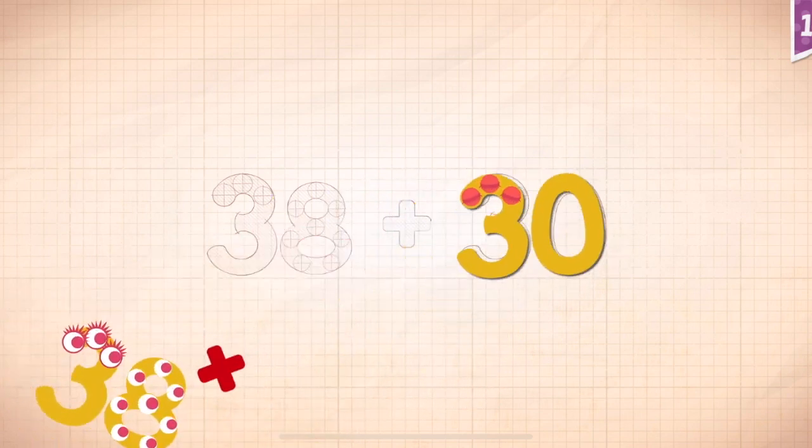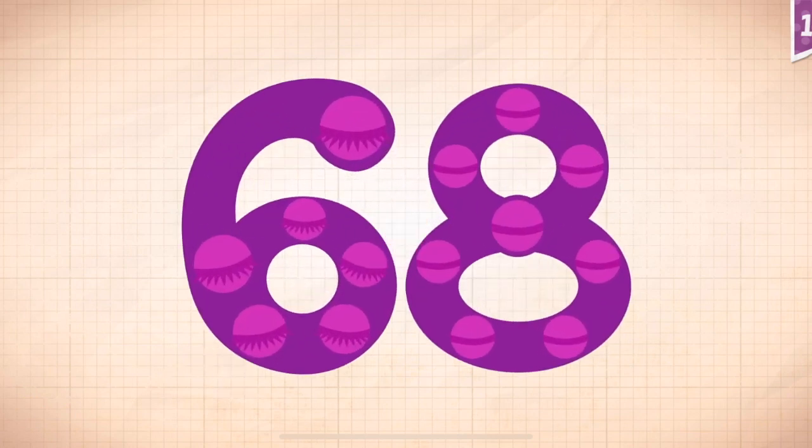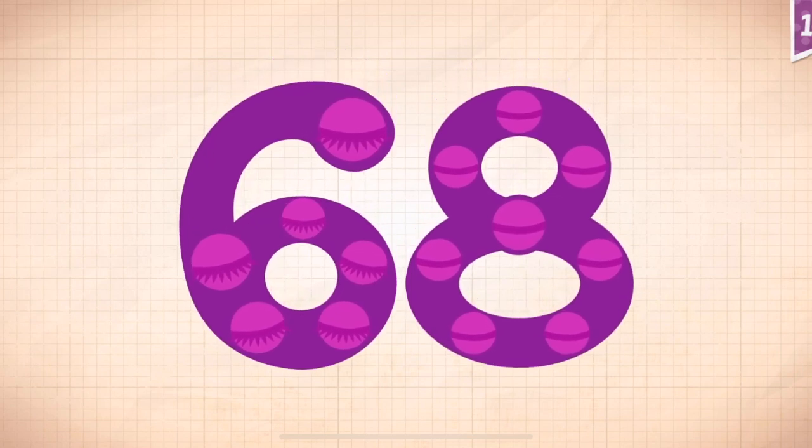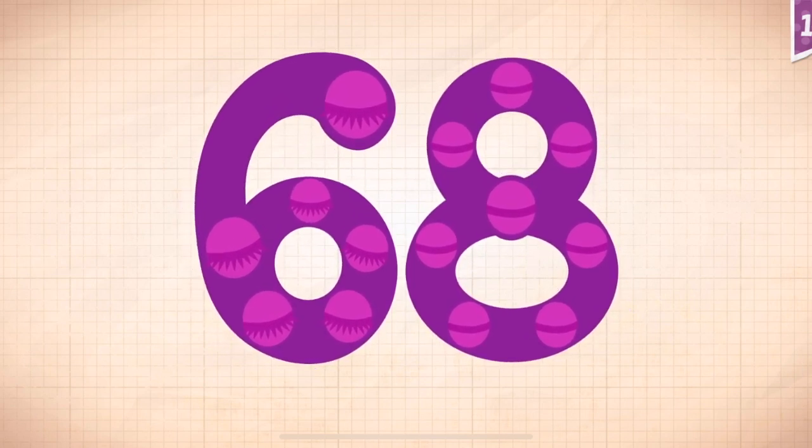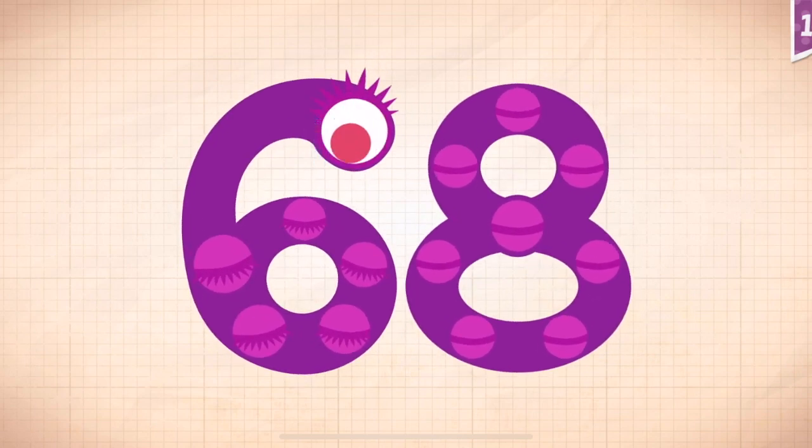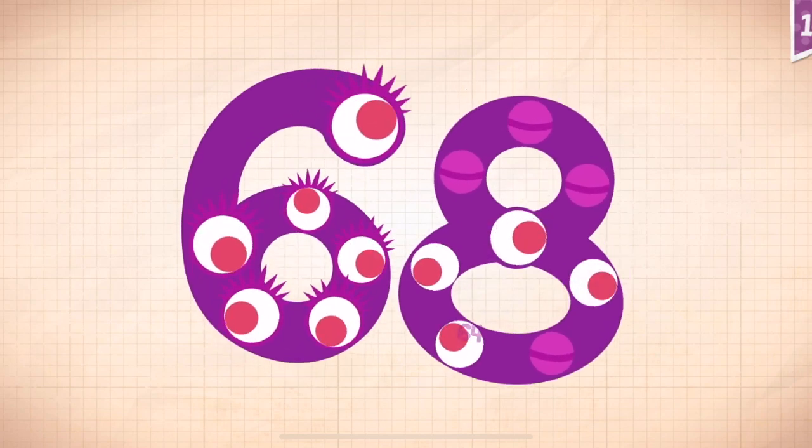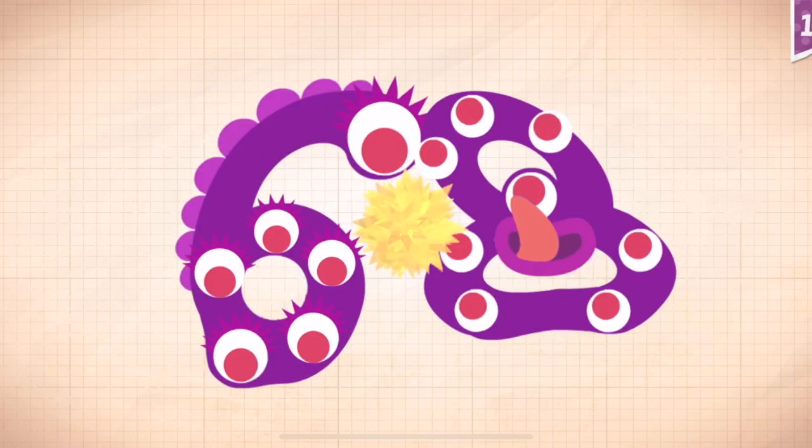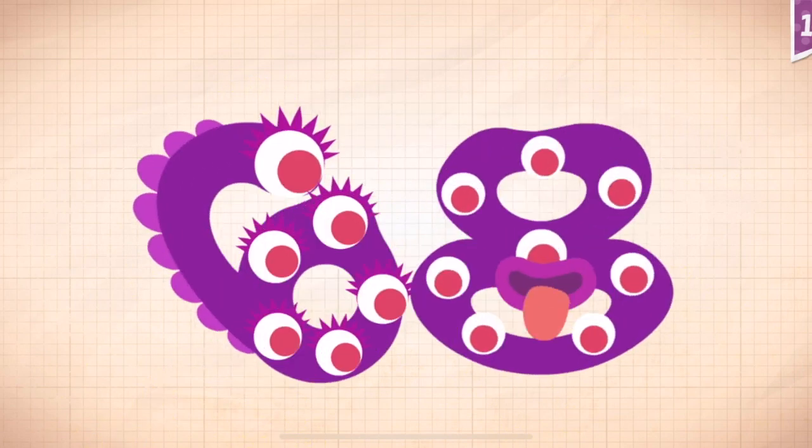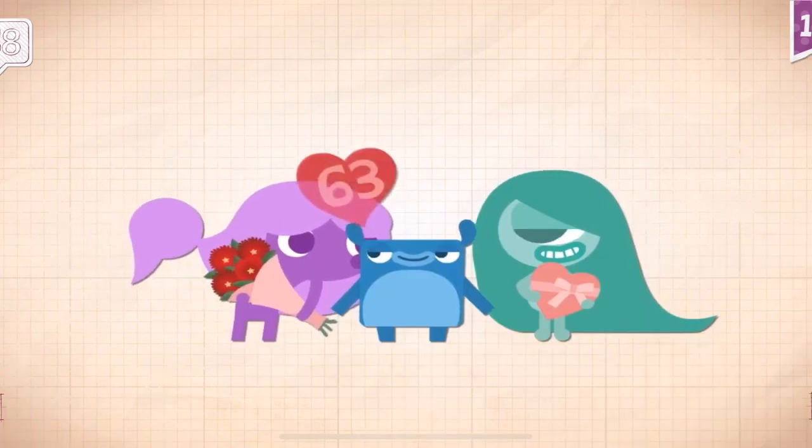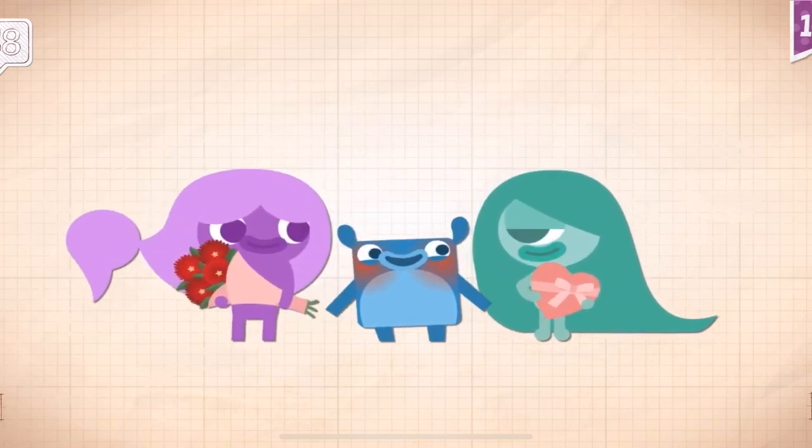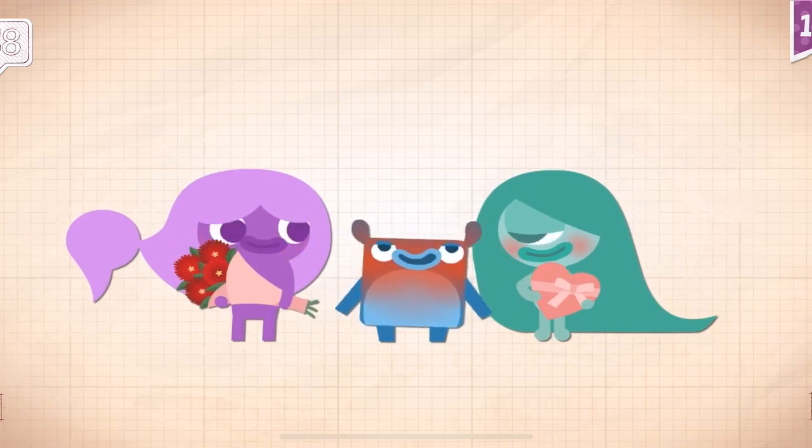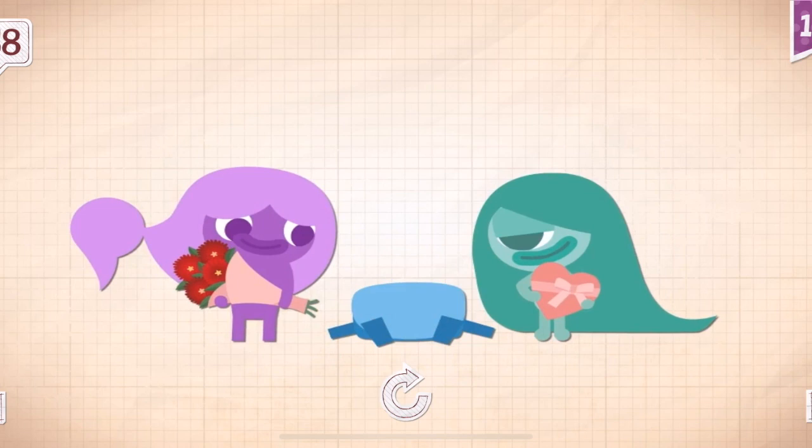38 plus 30 equals 68. Touch the monster's eyes to wake it up. 10, 20, 30, 40, 50, 60, 61, 62, 63, 64, 65, 66, 67, 68. Little Blue got 68 kisses after giving Yoshi and Amy chocolates on Valentine's.